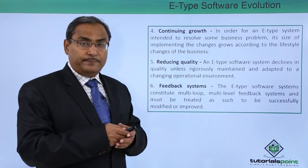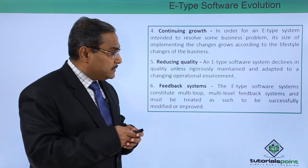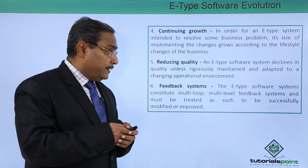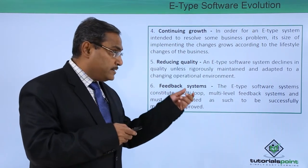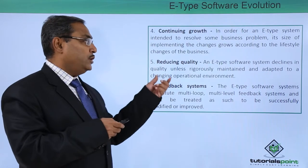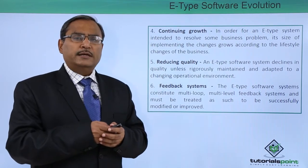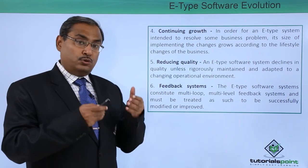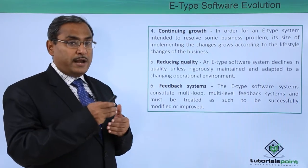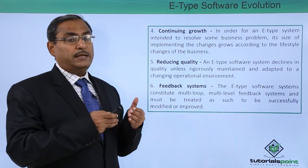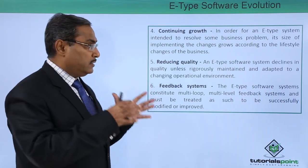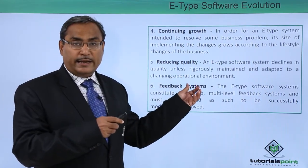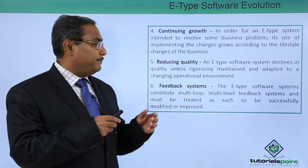The fifth law is reducing quality. An E-type software system declines in quality unless rigorously maintained and adapted to a changing operational environment. Change is inevitable, so we should be doing continuous maintenance and keeping our software under continuous monitoring and control, so that we can maintain its complexity throughout.